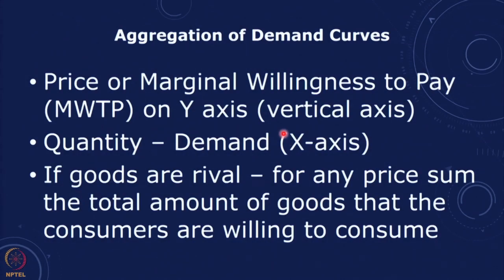Let us look at how we aggregate demand curves in the case of a private good. If we have two individuals, and if we can prove this for two individuals, we can extend it to any number of individuals in a society. If we have the marginal willingness to pay on the y-axis and the quantity demanded on the x-axis, and if the goods are rival, then at any price we will sum up the total amount of goods that the consumers are willing to consume.